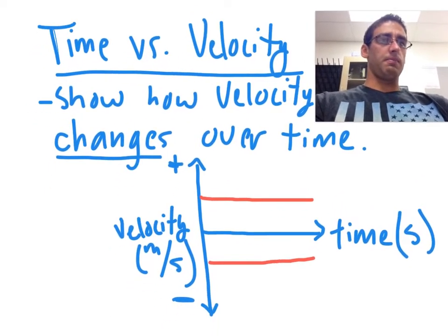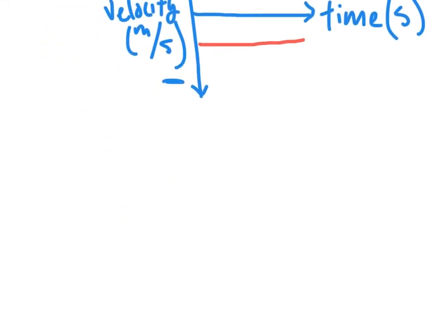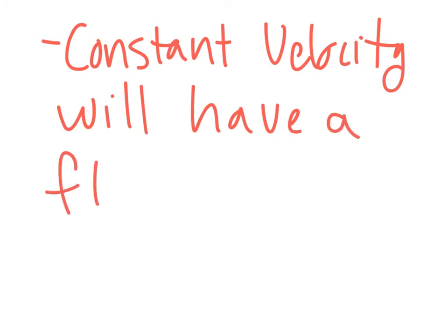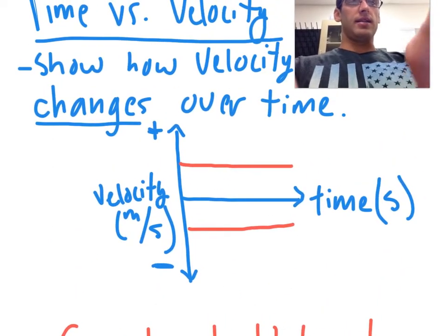Well, you're just going to have to deal with not seeing my face for a little bit. So let's make this note here. Constant velocity, which is everything we've done so far, will have a flat line. And think about it, that's because the velocity is not changing.